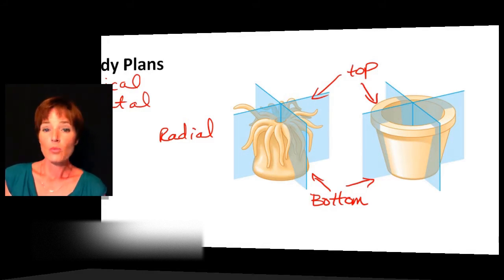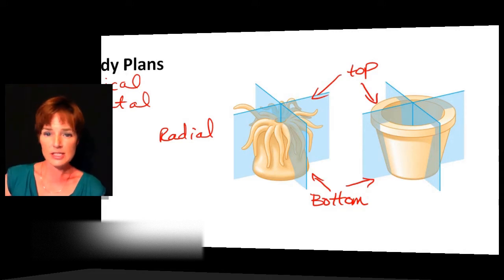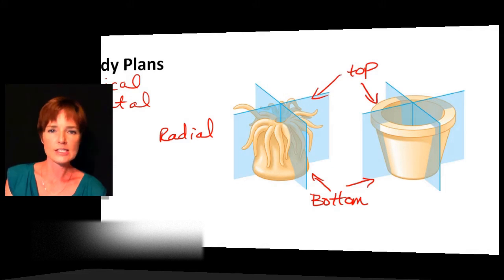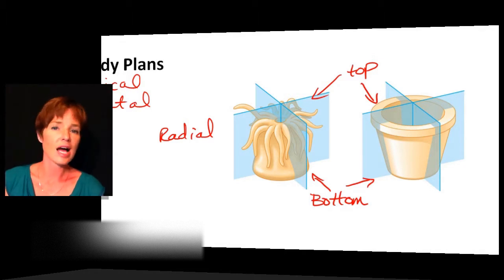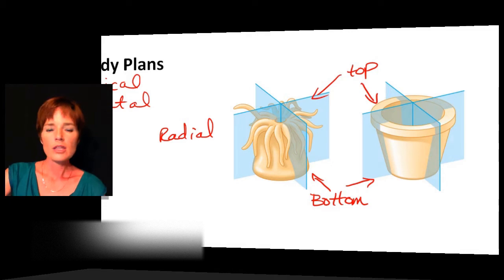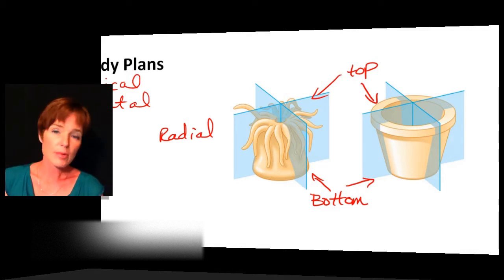If we take and cut them down as you see these planes in this diagram, we can't really distinguish between a right side and a left side, or a front and a back. So with radial symmetry there are really just two different sides: the top and the bottom. That was the first type of symmetry to evolve.